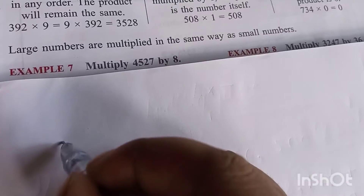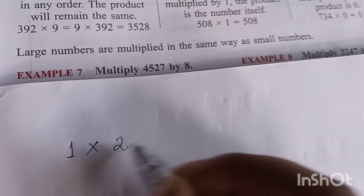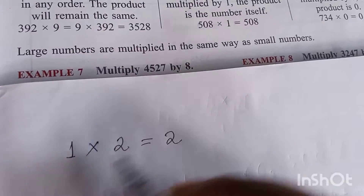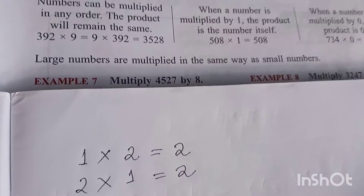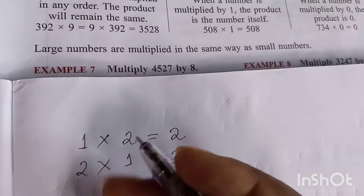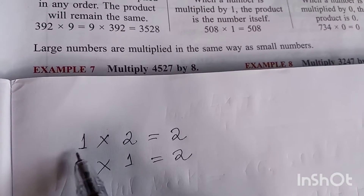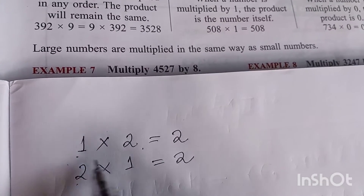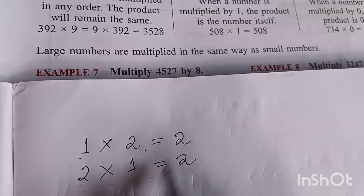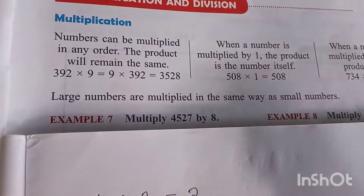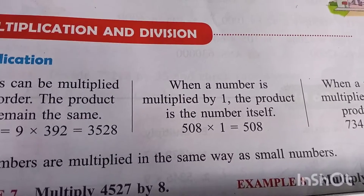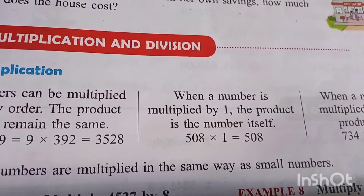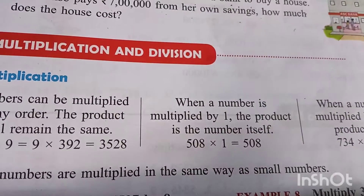Whether you multiply one into two, the answer is two, or if you multiply two into one, the answer will remain the same. You can multiply in any order. Next rule: when a number is multiplied by one, the product is the same number itself.